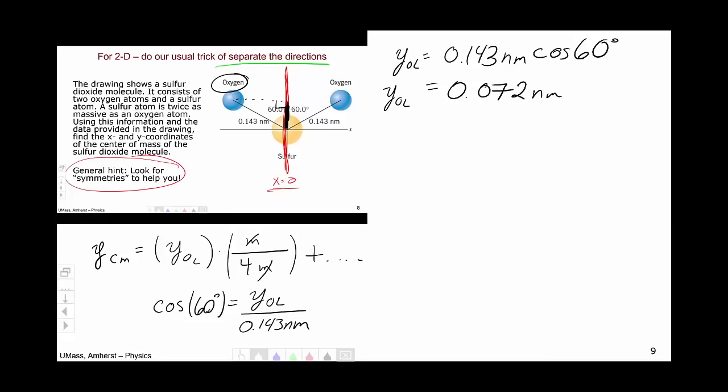gives me a y position of the oxygen on the left of being 0.072 nanometers. So my center of mass calculation for this oxygen on the left that I've circled in black is going to be 0.072 nanometers multiplied by the weight of 1 over 4.